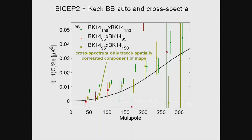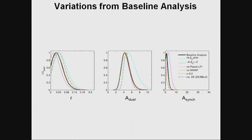You can get more leverage on dust by going to yet higher frequency. The next atmospheric window is about 220 GHz. We've already collected two seasons of 220 GHz data, and map sensitivity is already better than Planck's sensitivity to dust at 353 GHz. So pretty soon when we add our own 220 GHz data, the error bars will start to shrink again.